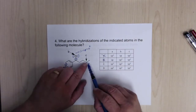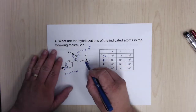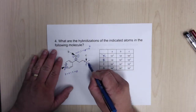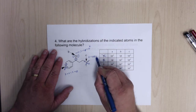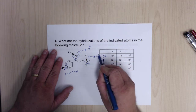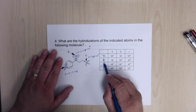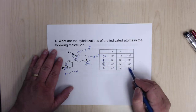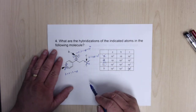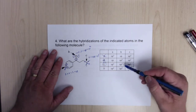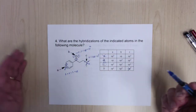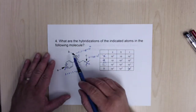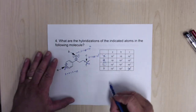For the third atom, counting the sets: 1, 2, 3, 4 — four sets, so it would be SPPP, four letters, which is SP3. So the answer here is C, because that one is SP3 while the others were SP2. We could have skipped looking at atom B and gone straight to this one.